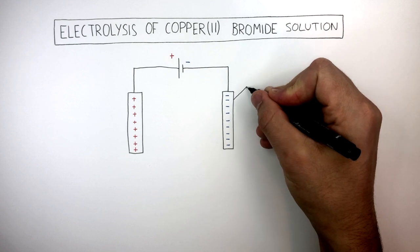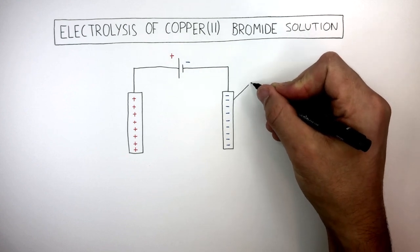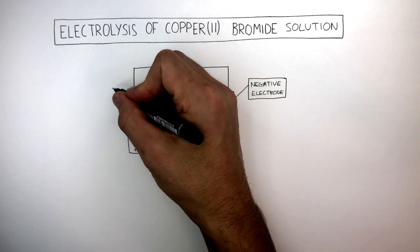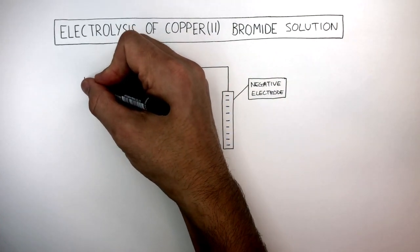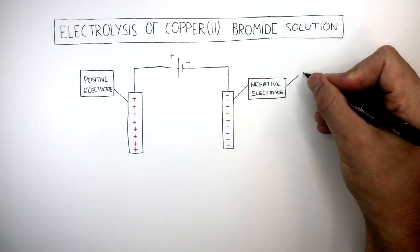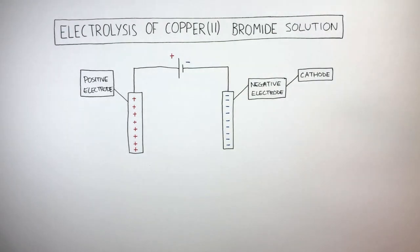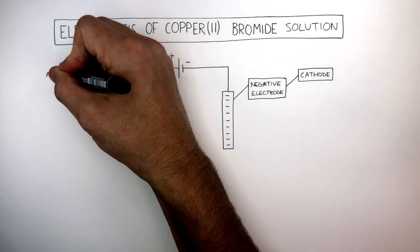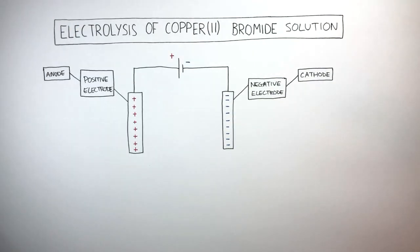The negative signs on this electrode show how this is the negative electrode, and the positive signs on this electrode show how this is the positive electrode. The negative electrode is known as the cathode and is always connected to the negative terminal of the cell or power pack, and the positive electrode is always known as the anode, which is connected to the positive terminal of the cell or power pack.